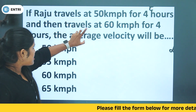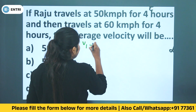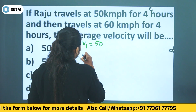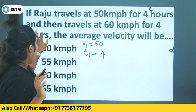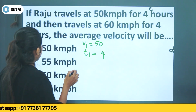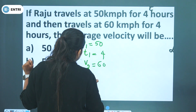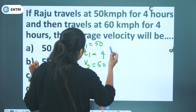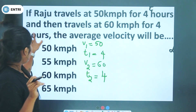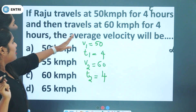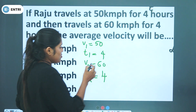Question 2: Raju travels at 50 km per hour for 4 hours — so v1 is 50 km/h and t1 is 4 hours. Then he travels at 60 km per hour for 4 hours — v2 is 60 km/h and t2 is 4 hours. What is the average velocity?